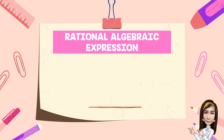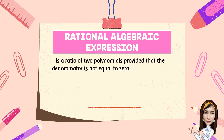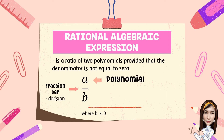A Rational Algebraic Expression is a ratio of two polynomials, provided that the denominator is not equal to zero. It is written in the form A over B, where B is not equal to zero. The fraction bar denotes division. A is a polynomial and B is also a polynomial, so we have the ratio of two polynomials.